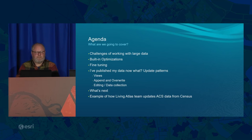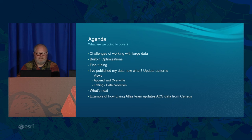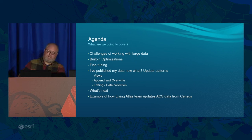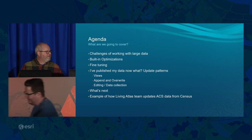Here's a brief agenda of what we'll cover: the challenges of working with large data, built-in optimizations useful to know about, fine-tuning you can do, and what happens once you publish that data and how to update it. Paul will cover views, append and overwrite, and editing and data collection. Jim will talk about how the Living Atlas team updates ACS data from the census — every year, within 24 hours of its release.